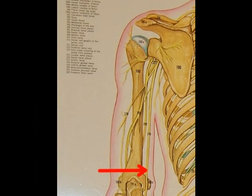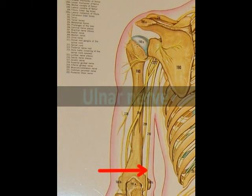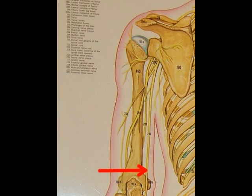Another area you can palpate is the region right above the posterior surface of the medial epicondyle. This is the ulnar nerve, and this is the nerve that causes you to feel a sharp pain when you hit your elbow, also known as your funny bone.